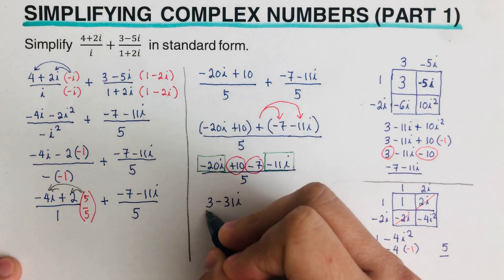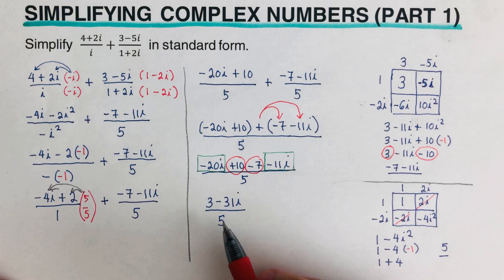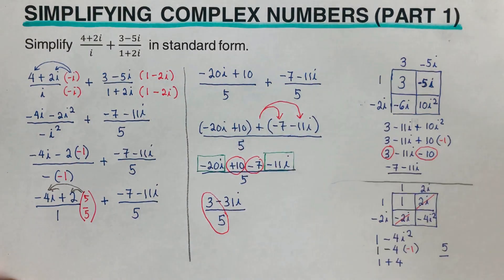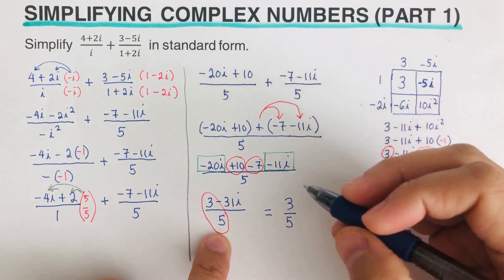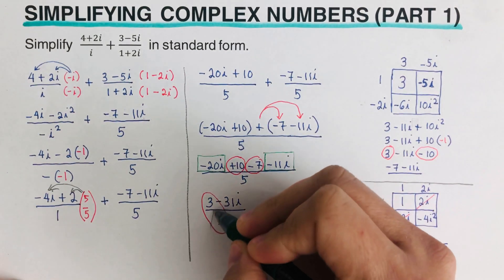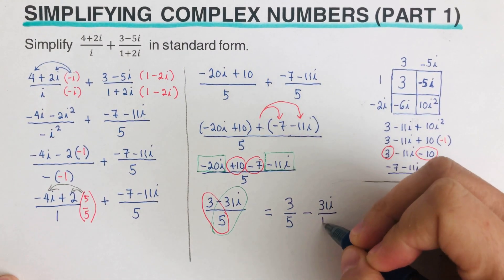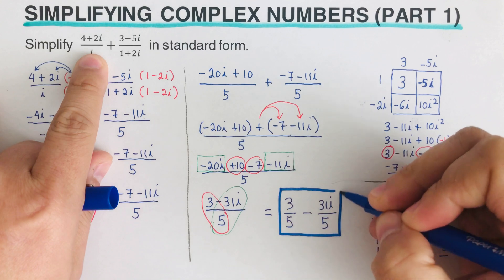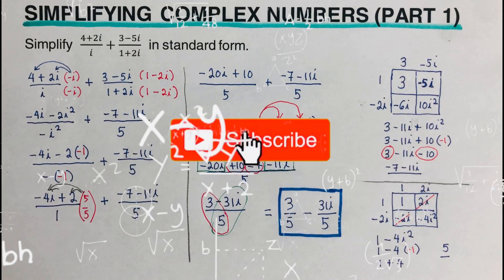The denominator 5 applies to both terms, so we can write the result as 3 over 5 minus 31i over 5. This is the sum of the two complex numbers written in standard form a plus bi, where 3 over 5 is the real part a and negative 31 over 5 is the coefficient b of the imaginary part. That's it — if you find this video helpful, hit like and subscribe for more math videos!